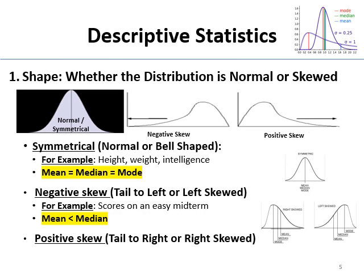Positive skew is the opposite — you've got a tail to the right, or right skewed. Housing prices are like this: most folks have houses somewhere between $250,000 and $500,000, but the distribution trails off for a long time because you've got millionaires and billionaires with very expensive houses. That would be positive skew. The mean gets pulled towards the tail, so the mean is going to be higher than the median in a positively skewed distribution. This is why they don't report mean housing prices — they report median housing prices, because the median doesn't get pulled quite as high towards the tail.